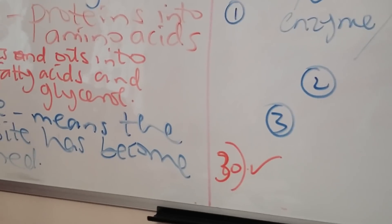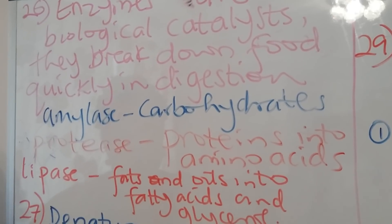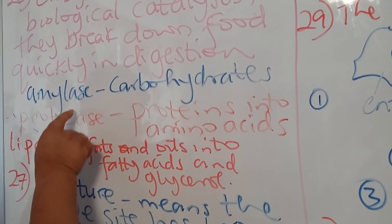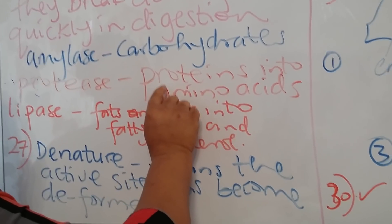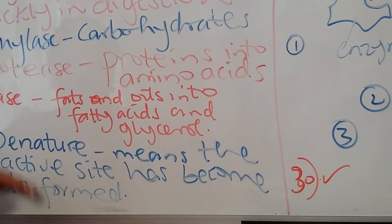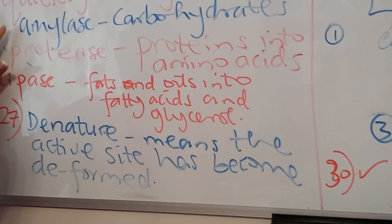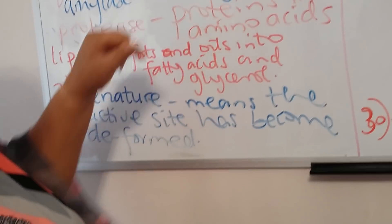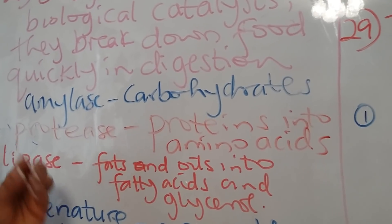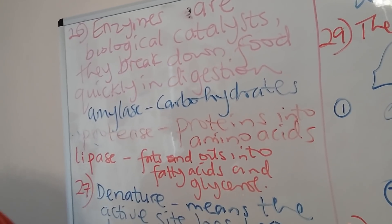Question 30 asks us to list the different enzymes and what they break down. Amylase breaks down starch into glucose. Protease breaks down proteins into amino acids. Lipase breaks down fats and oils into fatty acids and glycerol. All three enzymes are found in the small intestine. Amylase is also found in the mouth inside saliva, and protease is also present in the stomach.